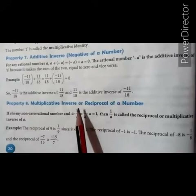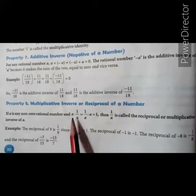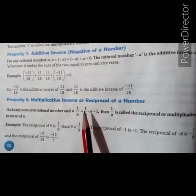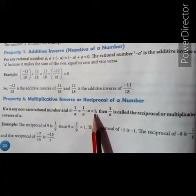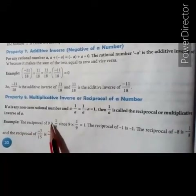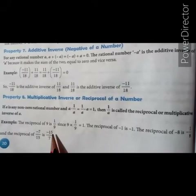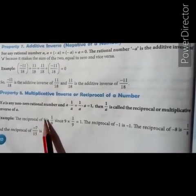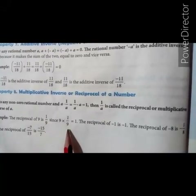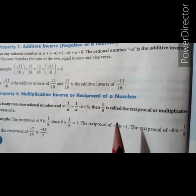Property 8: multiplicative inverse, or reciprocal of a number. If a is any non-zero rational number, then a multiplied by its reciprocal 1 upon a equals to 1, and 1 upon a multiplied by a also equals to 1. Then 1 upon a is called the reciprocal or multiplicative inverse of a. For example, the reciprocal of 9 is 1 upon 9. When we multiply a number and its multiplicative inverse, we always get 1. So 9 multiplied by 1 upon 9 gives 1.